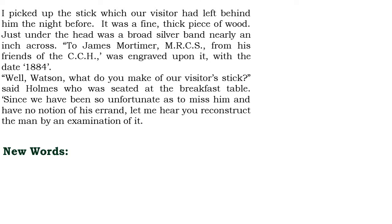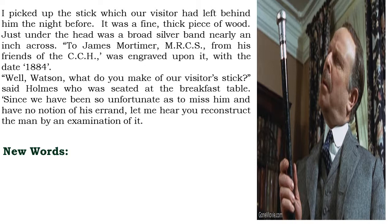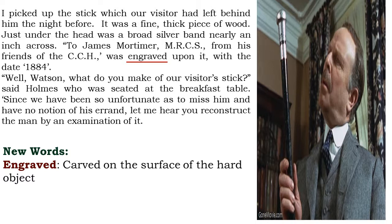The story begins with an unknown visitor visiting the house that Sherlock Holmes and John Watson share. As they were out, they couldn't meet the visitor. Now Sherlock Holmes is sitting in his Baker Street apartment with Dr. John Watson, and Watson is examining a walking stick which the visitor mistakenly left behind. Watson notices that it is made of nice wood and has a band of silver under the handle. It was dedicated to James Mortimer M.R.C.S. from his friends of C.C.H., engraved — meaning carved on the surface of a hard object — alongside the date 1884.